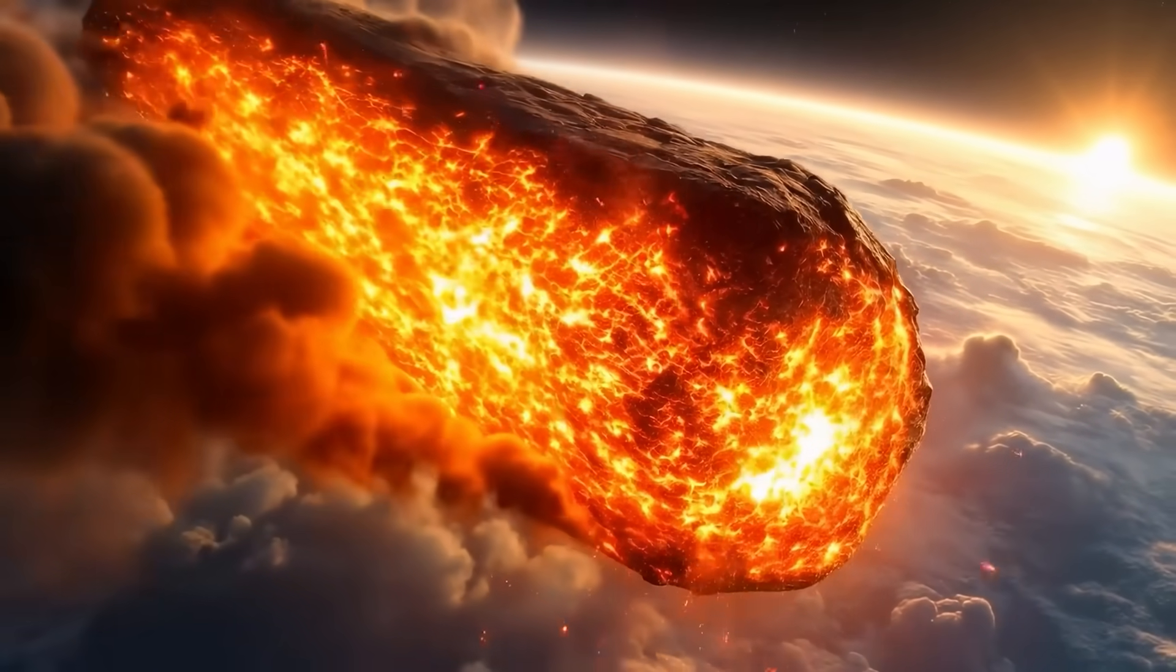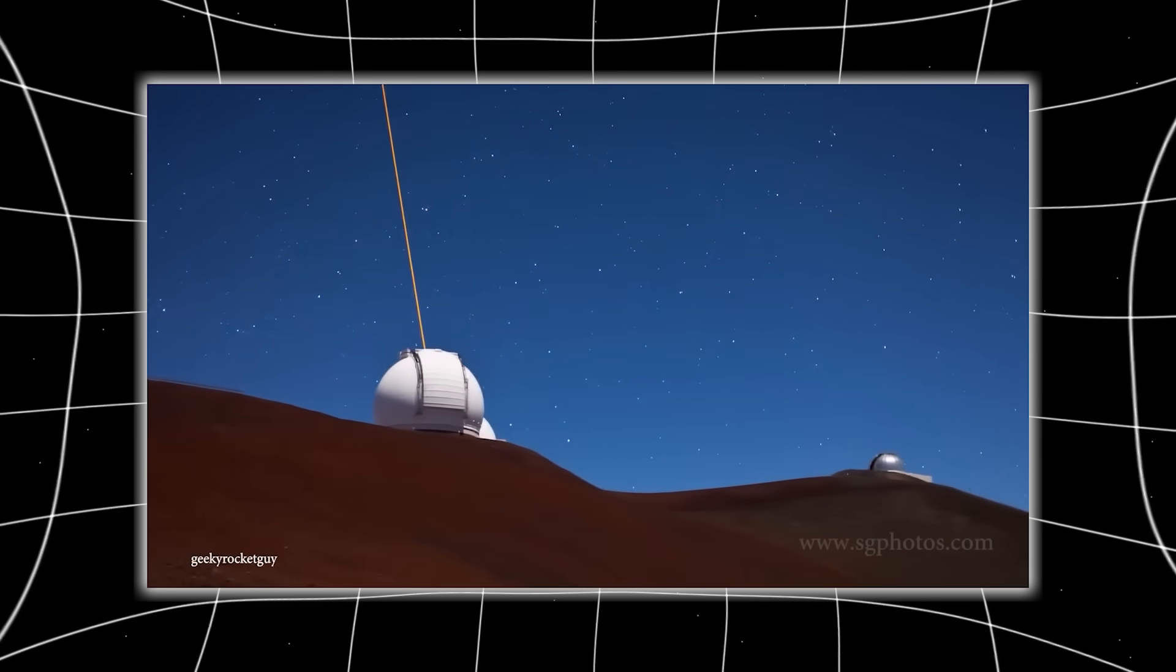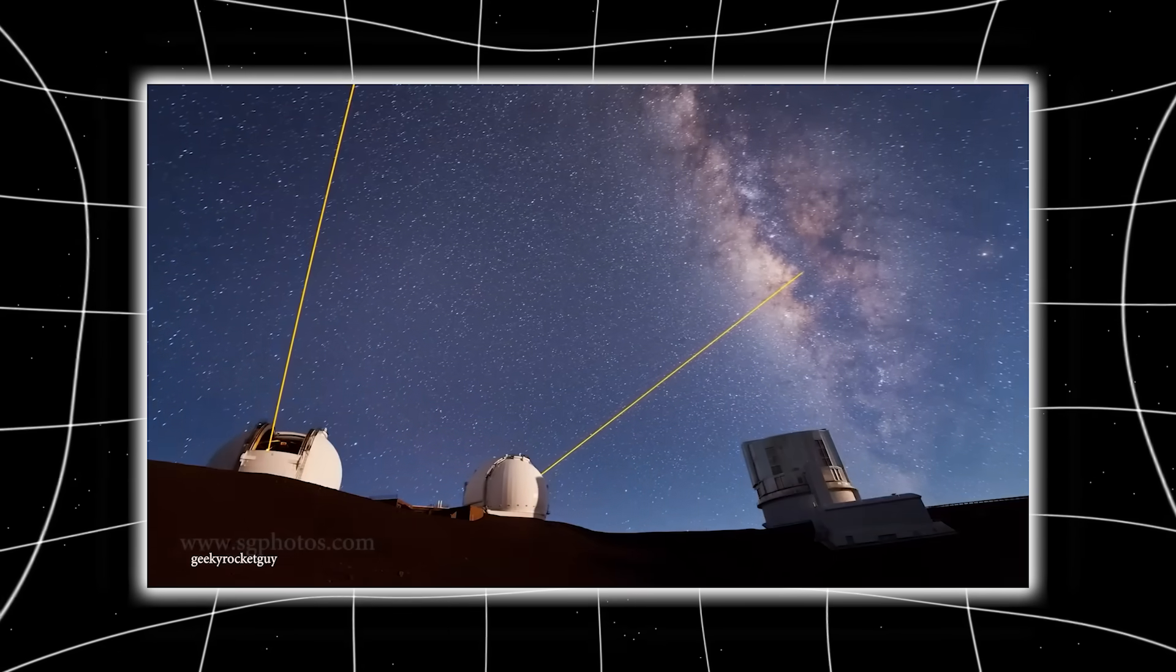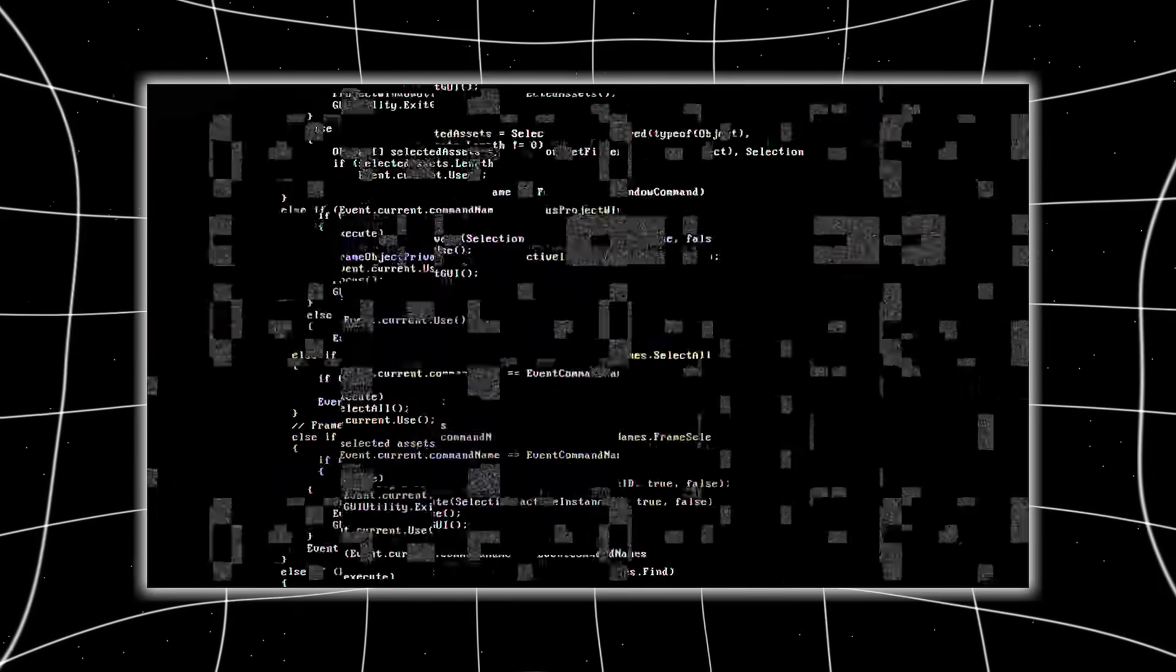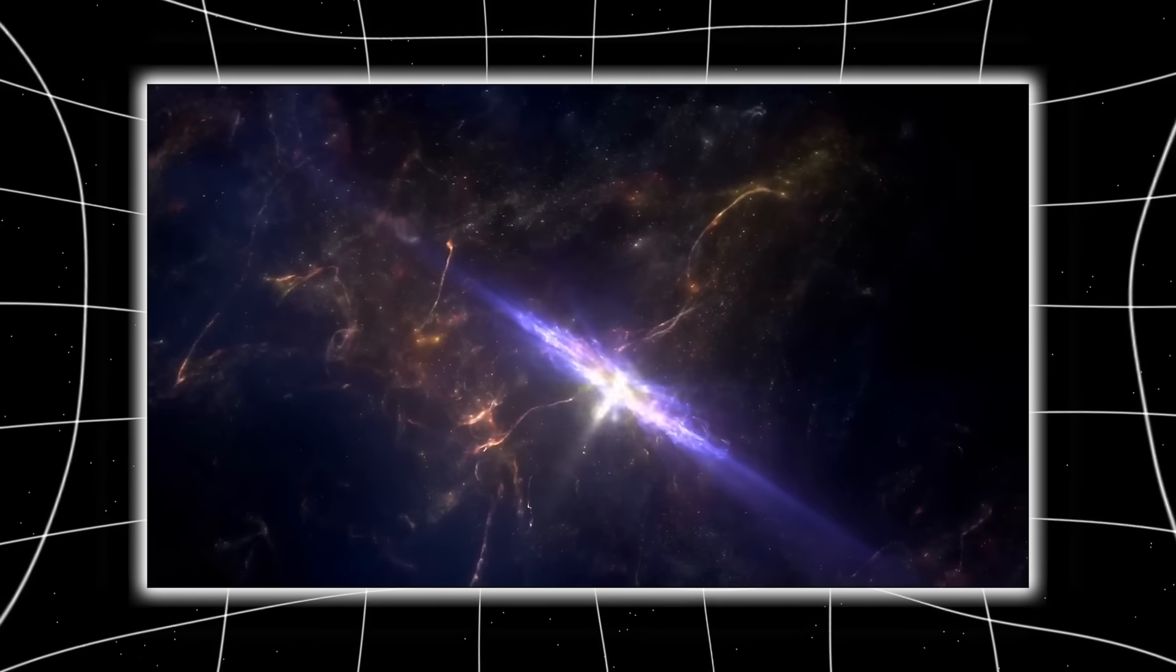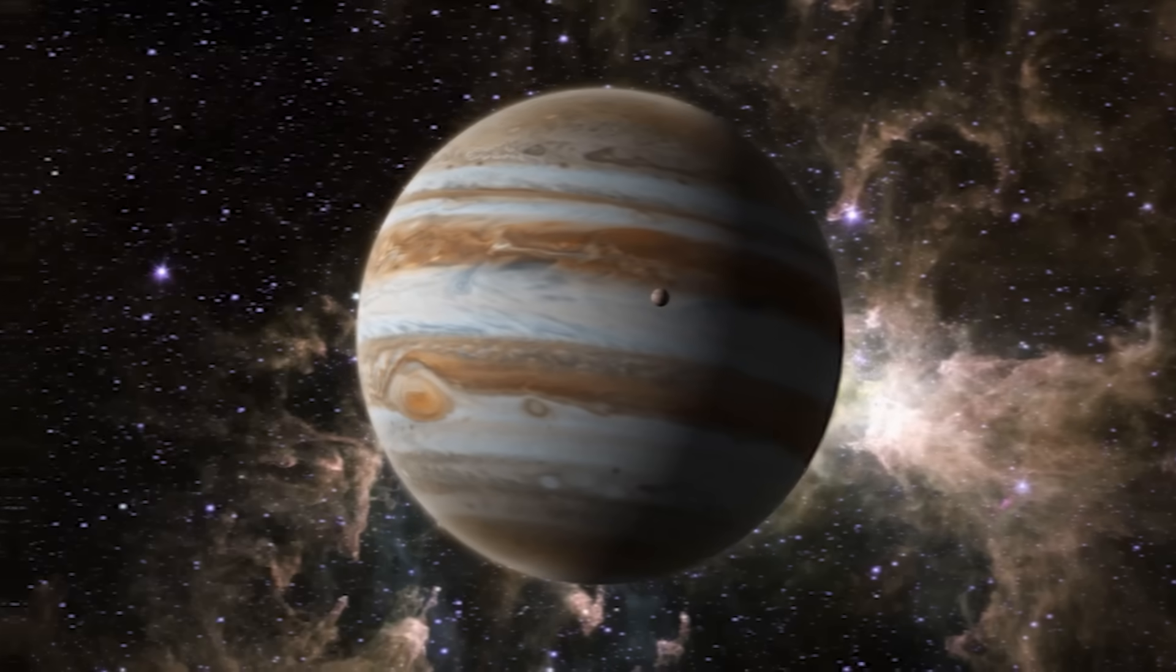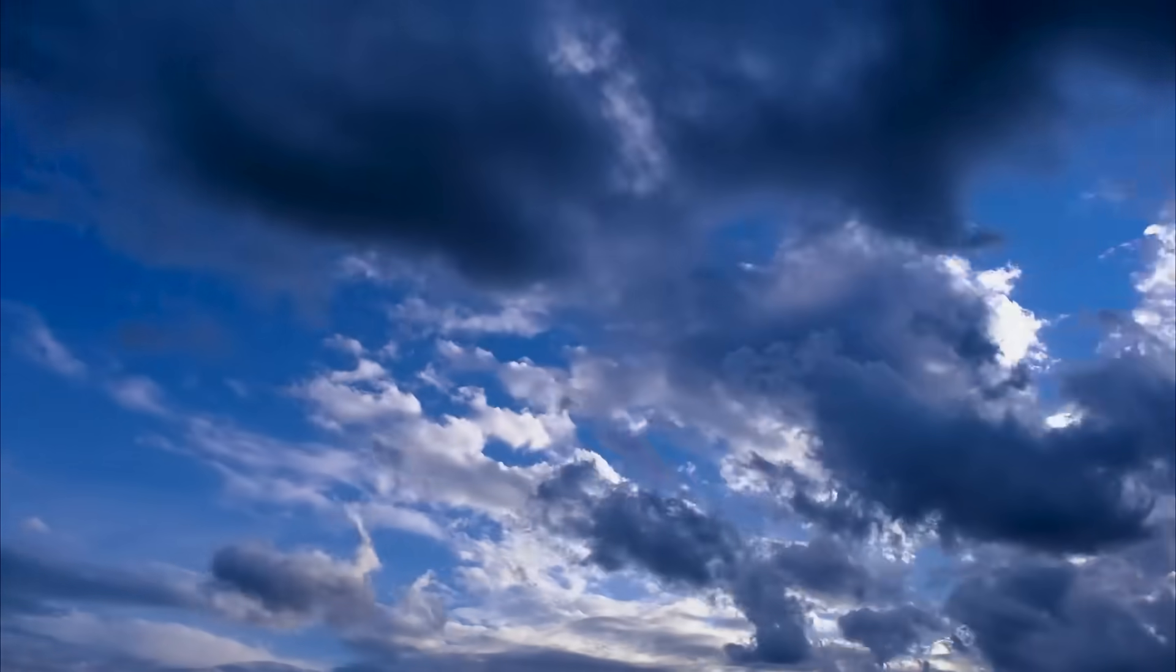Then came the most disturbing discovery of all. The IAWN Command Center in Vienna received a priority transmission marked Level Omega. It contained a partial data stream reconstructed from the blackout window, the missing 47 minutes when all observatories went silent. When decrypted, the data wasn't telemetry or images. It was binary. A structured transmission embedded inside the network itself, synchronized with 3I Atlas's pulse sequence. And when decoded, it formed coordinates. But not for space. For time. The location matched the orbit of Jupiter, but the timestamp didn't. It pointed forward. Exactly six years into the future.